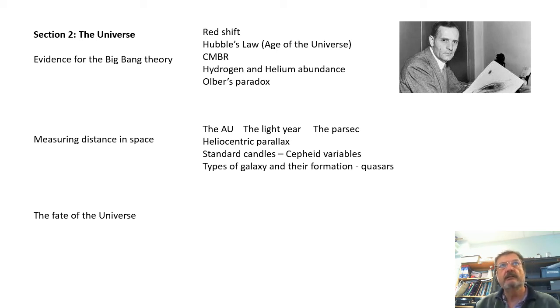Measuring distance in space - these are the different units astronomers use: the AU (astronomical unit), what is a light year, what is a parsec. How do we use heliocentric parallax to measure the distance to stars? How do we use standard candles? There's one type of standard candle, a Cepheid variable - you need to talk about this. This is what Hubble used to measure the distance to galaxies. What are the different types of galaxy and how do galaxies evolve? Certainly mention quasars when you're talking about galaxies.